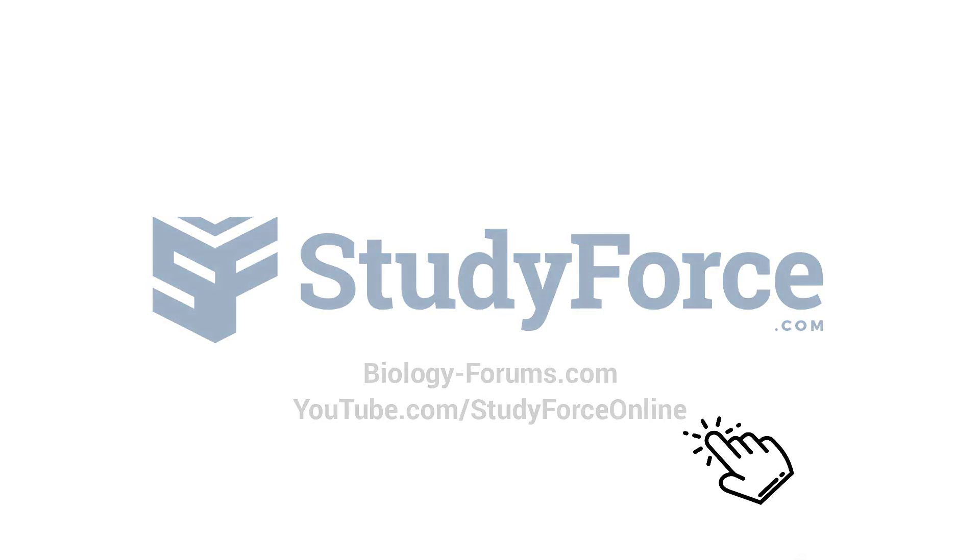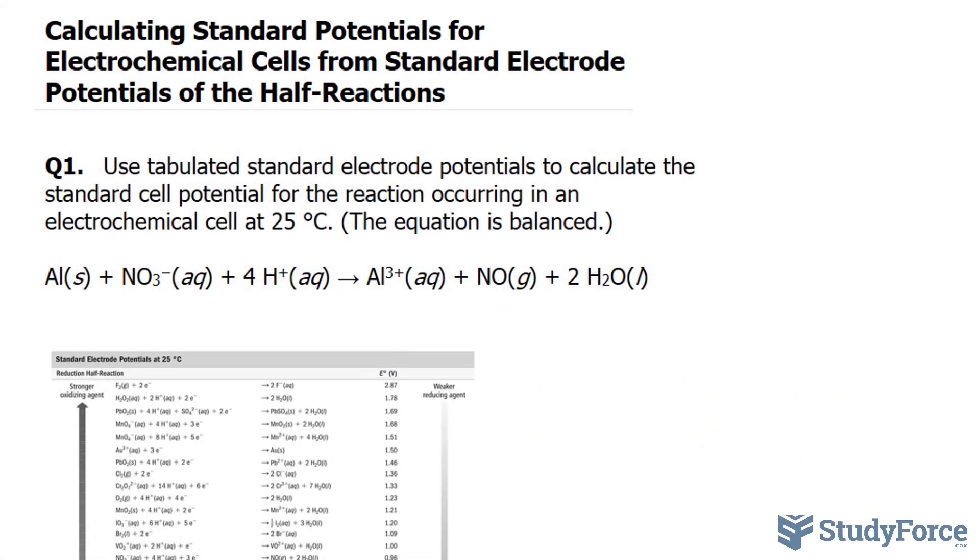In this lesson, we'll be calculating standard potentials for electrochemical cells from standard electrode potentials of the half reactions. Now, I know that's a mouthful, but let's get started with the first question.